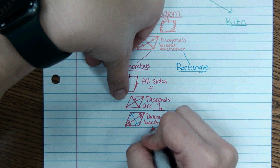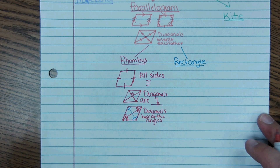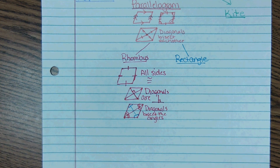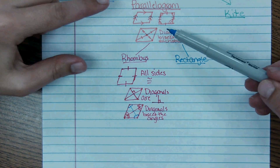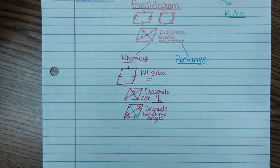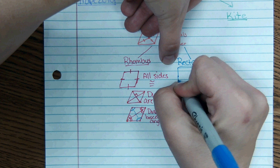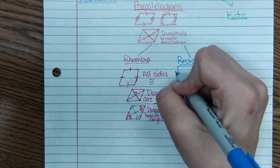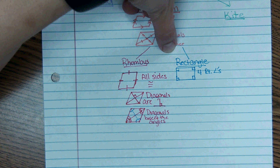So to summarize: for a rhombus, diagonals bisect the angles, and diagonals are perpendicular. A rhombus is a parallelogram, so all parallelogram properties apply, plus these additional ones. For a rectangle — which you're very familiar with — it is also a parallelogram, so opposite sides are equal and parallel. But in addition, a rectangle has four right angles — four 90-degree angles.